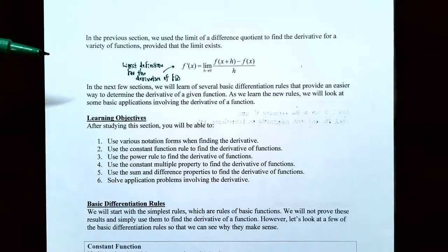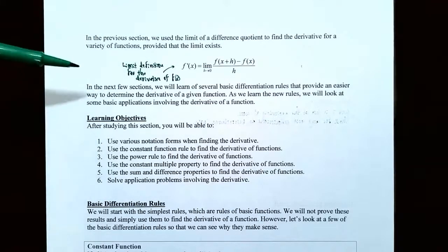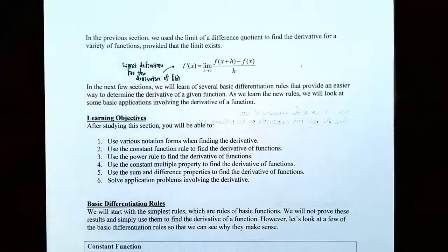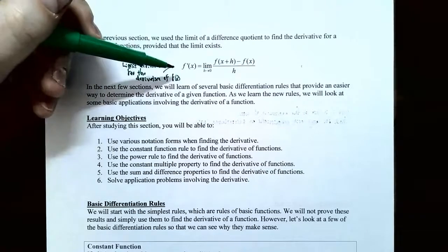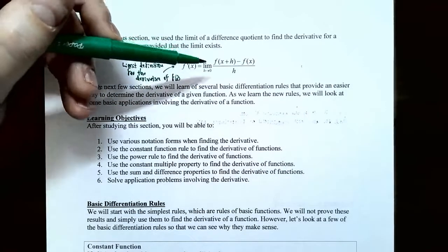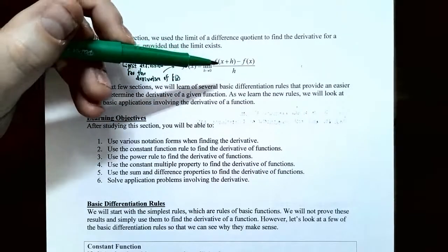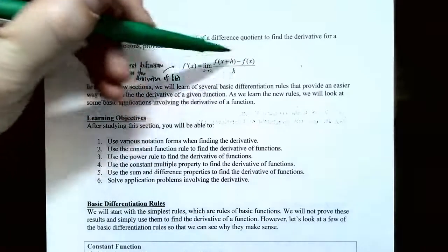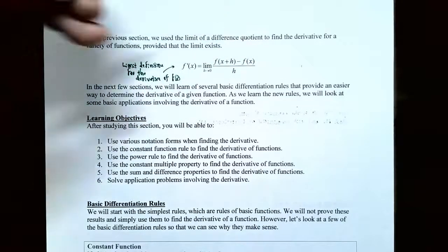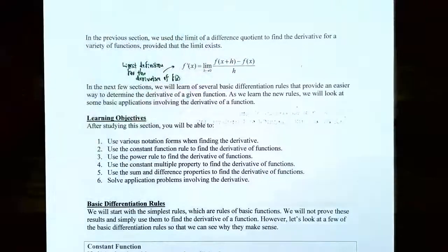We had linear functions, quadratic functions, rational functions, radical functions. If this limit exists, then that was what the derivative was actually equal to — so f prime of x is equal to the limit as h approaches zero of f of x plus h subtract f of x all divided by h. This part without the limit was called the difference quotient, but if you have a limit as h approaches zero, then you get what's called the derivative.